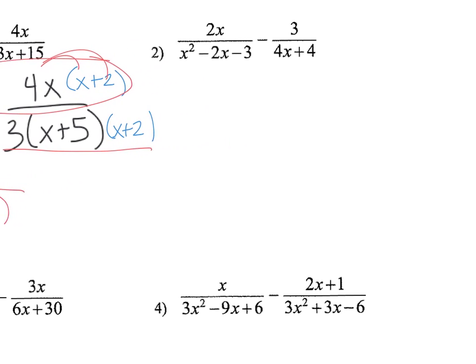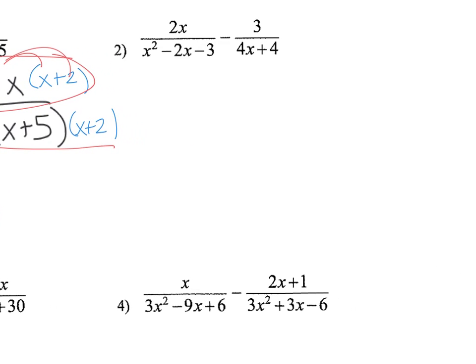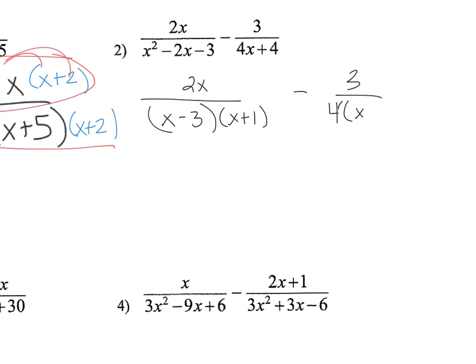And then number 2, the first step I'm going to do is factor out my denominators. So this turns into x minus 3 times x plus 1, minus 3 times 4 times x plus 1.